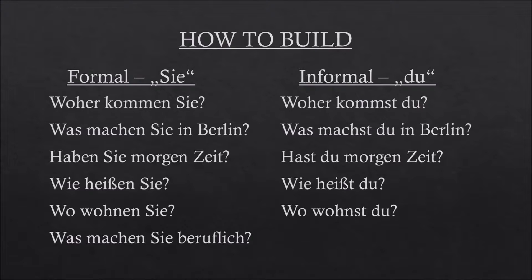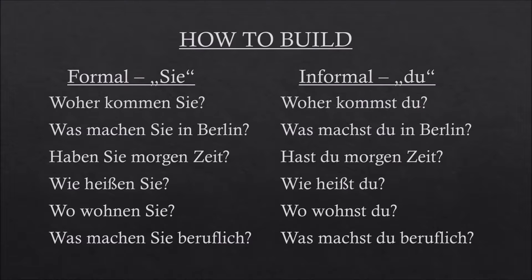'Was machen Sie beruflich?' / 'Was machst du beruflich?' — What do you do for a living? As you can see, every form needs another verb ending, and we will find out more about that detail in the next lesson. Realizing this difference, which doesn't exist in English, might make you ask yourself: how do I know when to use which form?